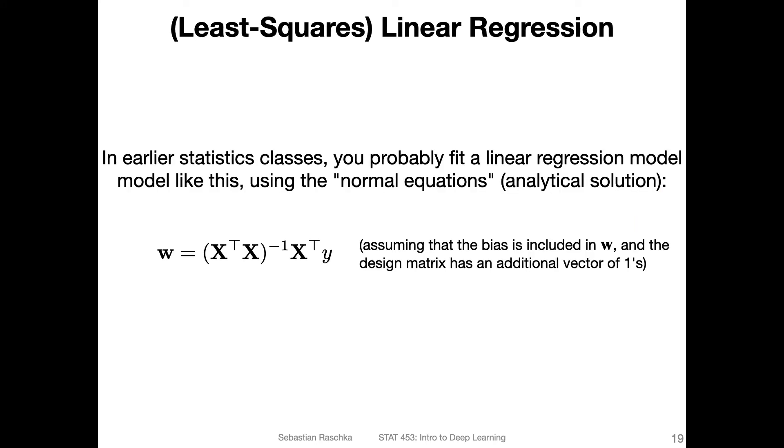In earlier statistics classes, you probably fit a linear regression model using the normal equations, which are an analytical solution to the minimization problem in least squares linear regression. To minimize the squared error, you compute w = (X^T X)^(-1) X^T y, where this is your design matrix.